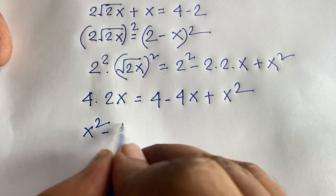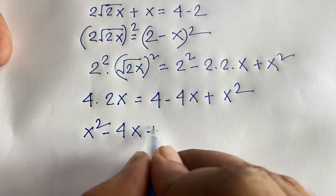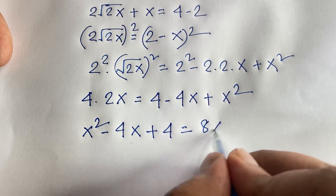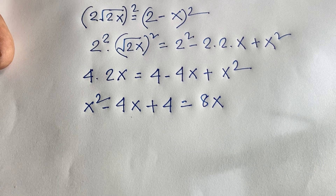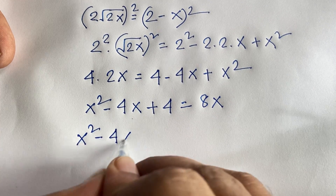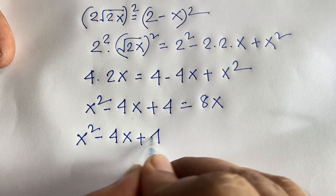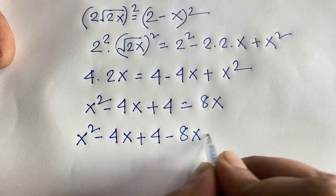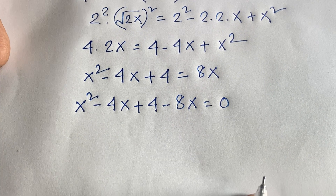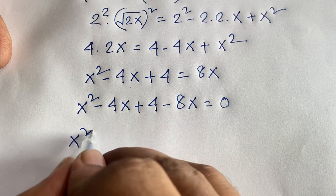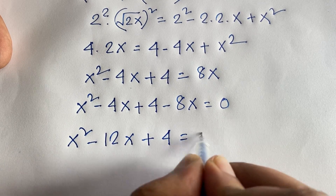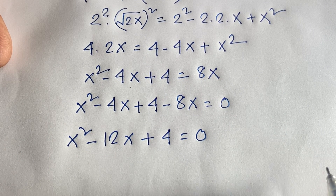Writing the equation out: x squared minus 4x plus 4 equals 8x. Moving 8x to the left side gives x squared minus 4x plus 4 minus 8x equals 0, which simplifies to x squared minus 12x plus 4 equals 0. This is a quadratic equation.